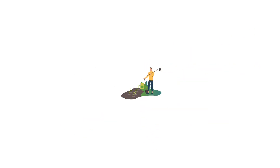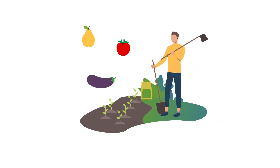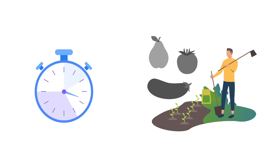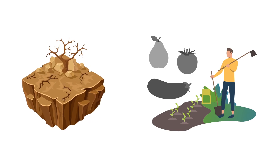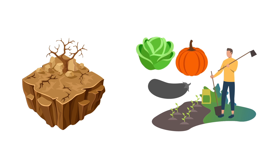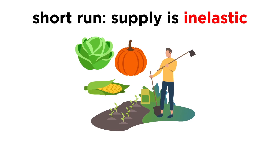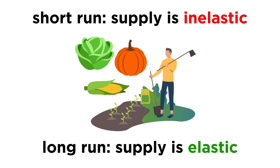An easy example to demonstrate this is farmers. Say a farmer's crops fail due to a drought. That farmer is going to make dramatic adjustments, or they might end up losing a lot of money, but those adjustments won't pay off until long after the drought is over. In the long run, the farmer might be able to take measures to prevent the loss of crops in the case of future droughts, or perhaps adjust the types of crops that are planted. In this case, in the short run, supply is inelastic, and in the long run, supply is more elastic.